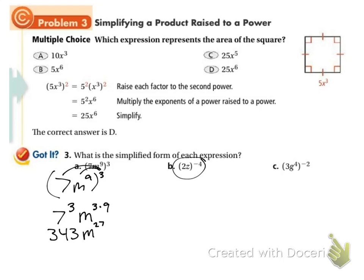Alright, let's try this one. We've got a negative exponent now. So I've got two z to the negative four. So I need to bring the negative four into both of them. Two to the negative four, z to the negative four. Before I simplify those, I'm going to bring them to the bottom. So this is one over two to the fourth, z to the fourth. And two to the fourth is sixteen. So sixteen z to the fourth.